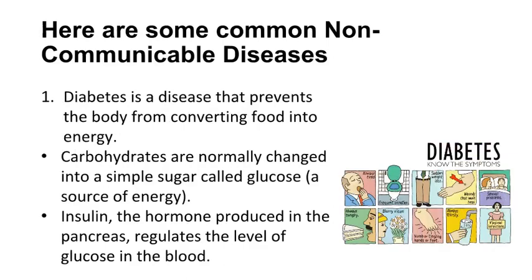Here are some common non-communicable diseases. Diabetes is a disease that prevents the body from converting food into energy. Carbohydrates are normally changed into a simple sugar called glucose, a source of energy. Insulin, the hormone produced in the pancreas, regulates the level of glucose in the blood.